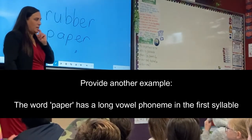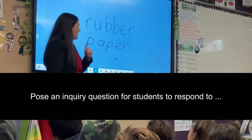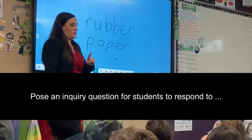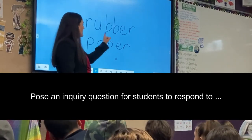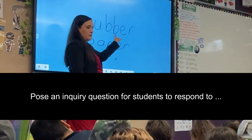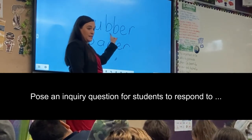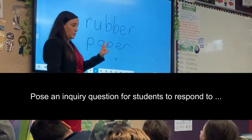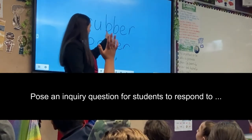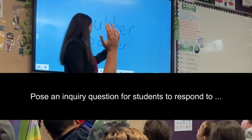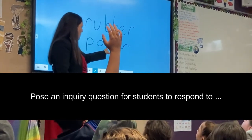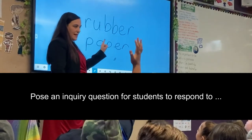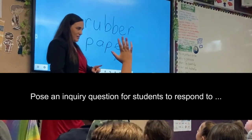Now I have a question. My question is: how do I know when to double the consonant in the middle of a two-syllable word? How do I know when to double it and how do I know when not to double it? That's my question.